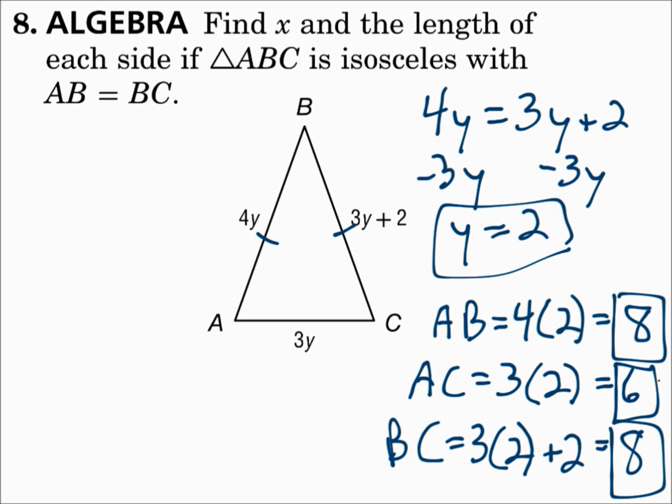Remember: if a triangle has all acute angles, it's acute. One obtuse angle makes it obtuse. One right angle makes it a right triangle. If all angles are the same, it's equiangular. For sides: if all sides are different, it's scalene; if at least two sides are the same, it's isosceles; if all sides are the same, it's equilateral. An equilateral triangle is always equiangular, always acute, and always isosceles — so it carries all four classifications.